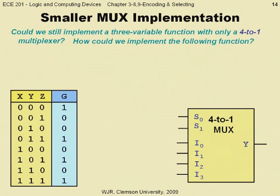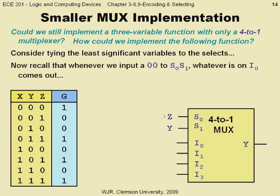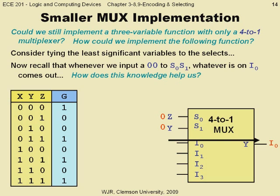Consider implementing the function g given in the truth table shown. We will tie the least significant two variables to the select lines. Recall that a mux will output whatever is on i0 whenever the input is 00. In this case, the mux will output i0 when y and z are both 0. We simply look at the truth table as a set of four one-variable truth tables of x, where each table is specified by y and z.